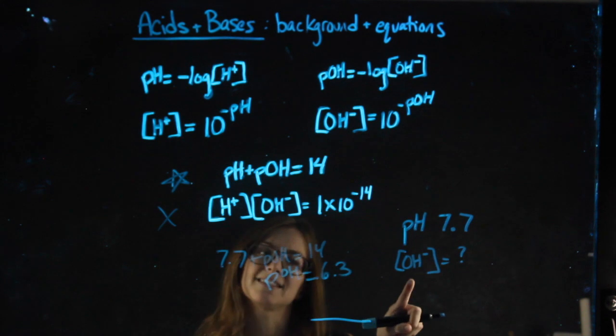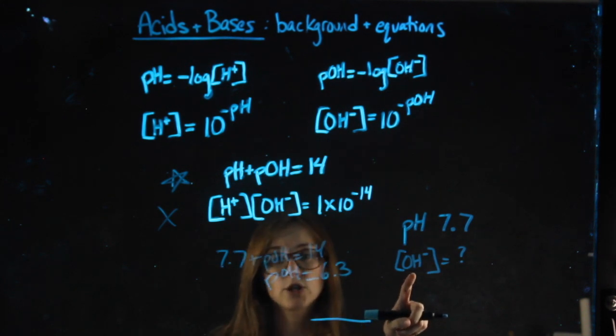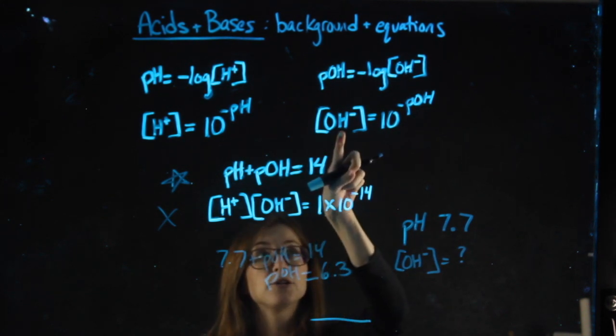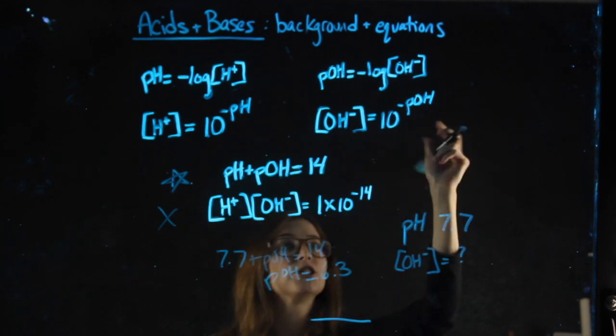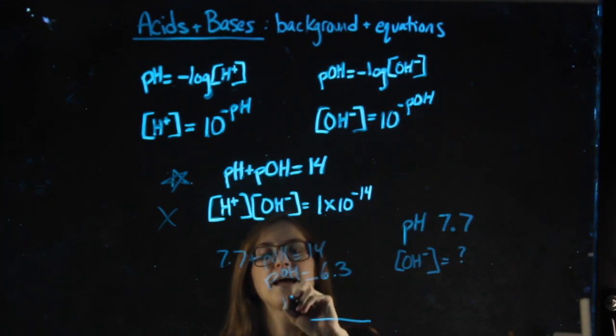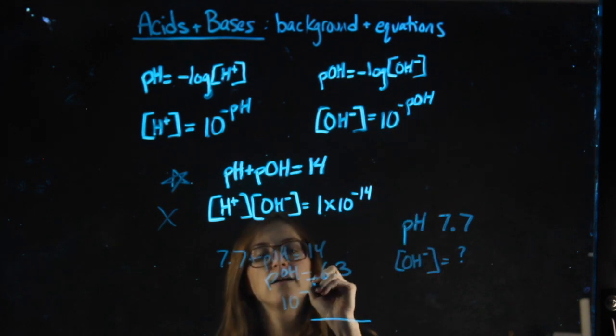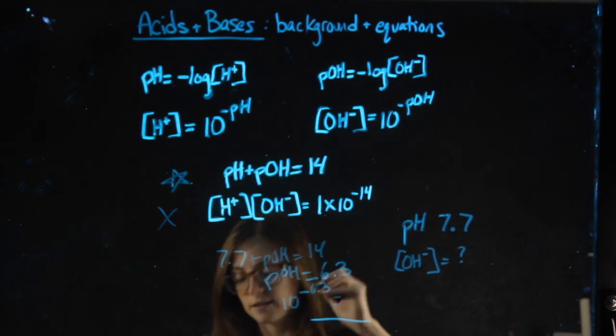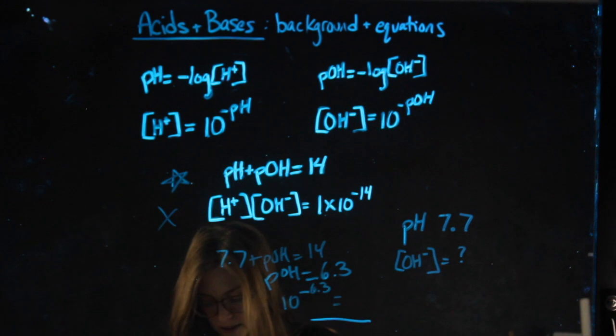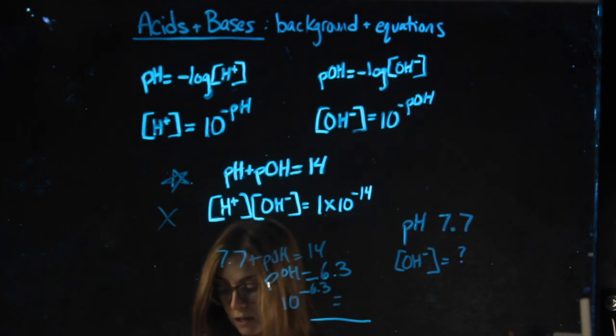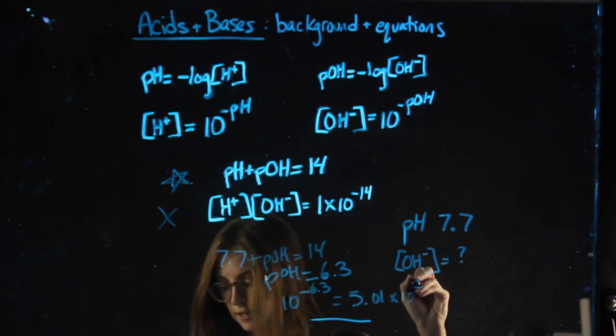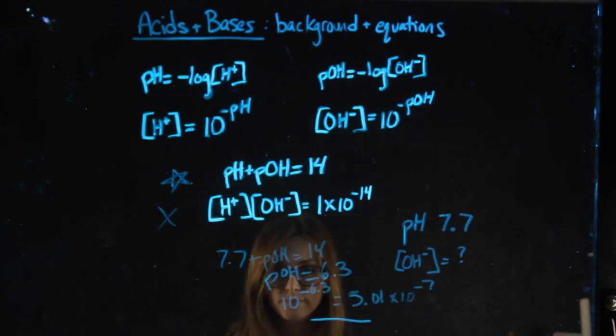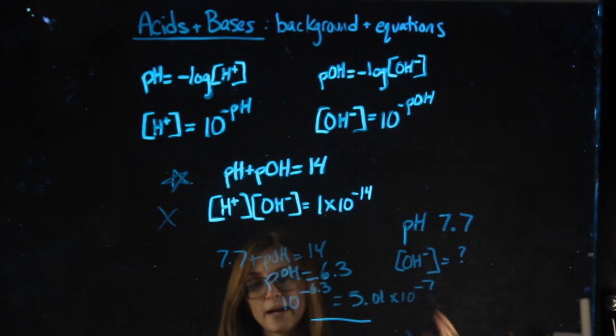Now I know my pOH, that's different than my hydroxide concentration. But if I want to find my hydroxide concentration, I can plug my pOH in. So then I would say 10 to the negative. There's a negative sign there. 6.3. In my calculator, 10 to the negative 6.3. And it's coming out for me with a whole bunch of zeros. So I might want to switch it to scientific notation. So it would be 5.01 times 10 to the negative 7. And that would be my hydroxide concentration.